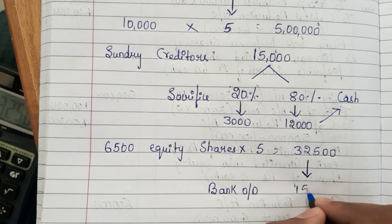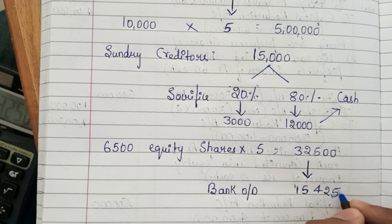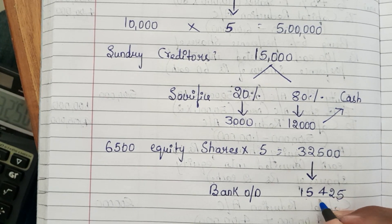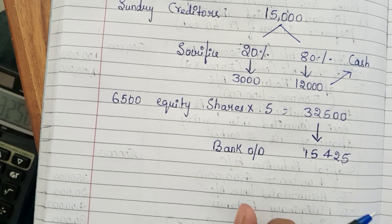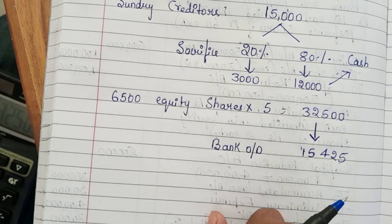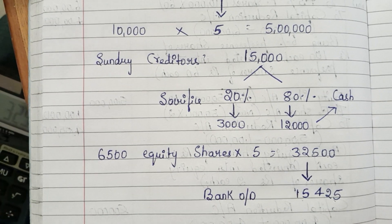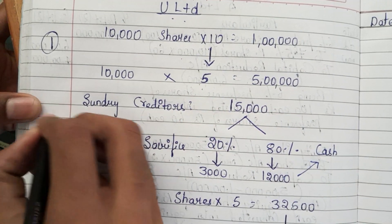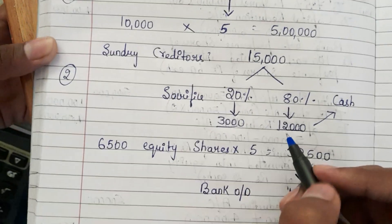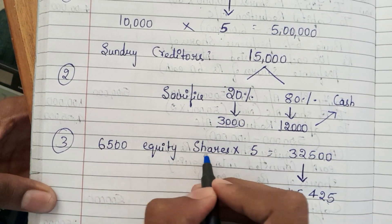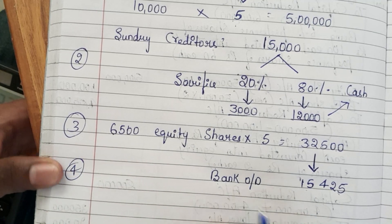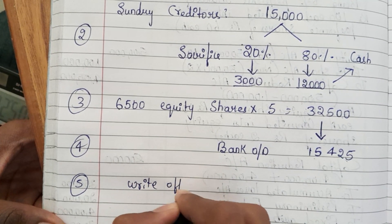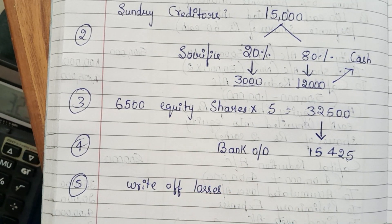The bank overdraft is Rs.15,425, which will be written off. The directors also found that the machinery is overvalued. In total, we need to pass five journal entries: first, converting shares from Rs.10 to Rs.5; second, settling sundry creditors; third, issuing 6,500 equity shares of Rs.5 each; fourth, writing off the bank overdraft; and fifth, writing off all losses.